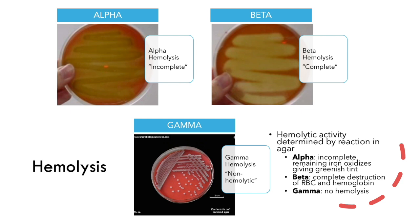In beta hemolysis, this is complete hemolysis. There is no heme group left behind, and the agar itself is completely clear where any of the hemolysins came into contact with red blood cells. Gamma hemolysis means non-hemolytic, or no hemolysis occurring. In this case, E. coli has no hemolytic activity, so it's incapable of breaking down red blood cells.